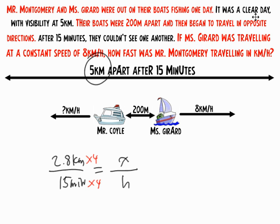So therefore, Mr. Coyle had to be traveling 11.2 kilometers per hour, because he had to go 2.8 kilometers in 15 minutes, which means he had to be traveling 11.2 kilometers per hour.